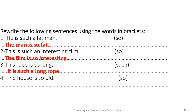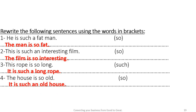Number four: 'The house is so old.' Use such — 'It is such an old house.' We use 'an' before the vowel sound. Old is an adjective beginning with a vowel sound, and house is a singular countable noun. Thank you for listening, and have a nice day. Goodbye!